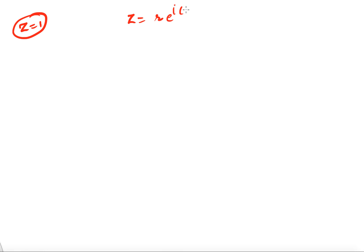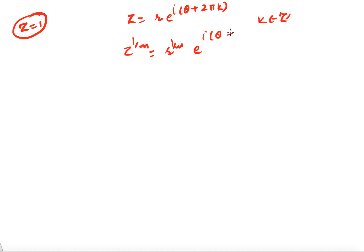In general, for any complex number z written as r·e^(i(θ+2πk)), the mth root is r^(1/m) · e^(i(θ+2πk)/m), where k takes values 0, 1, 2, …, m−1.